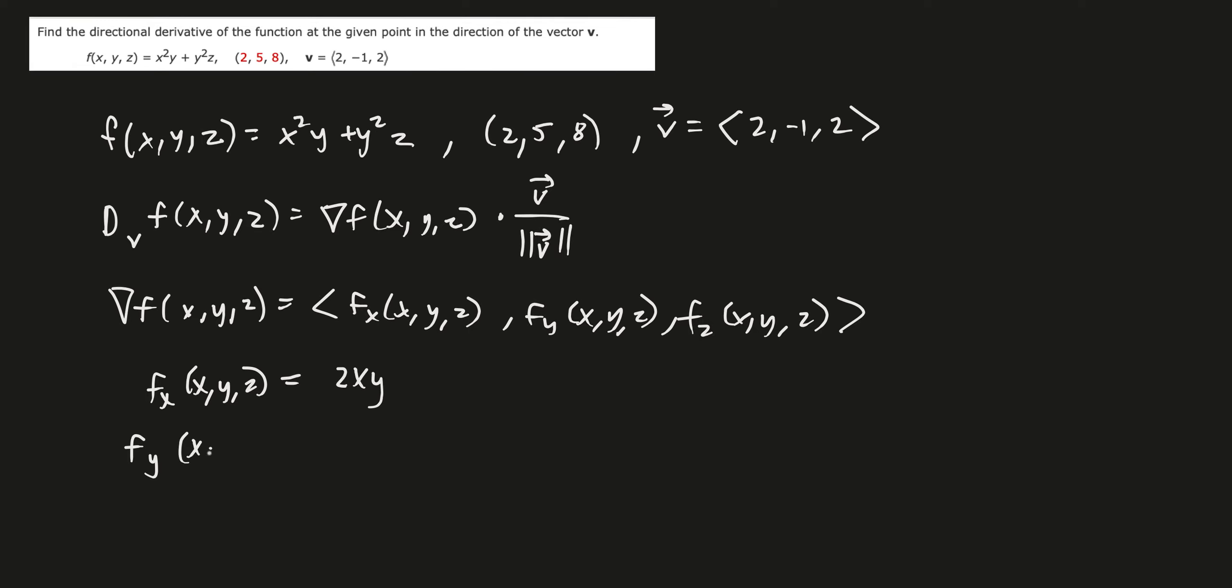Partial derivative with respect to y, treating x and z as a constant, we have x squared plus z times 2y, which is of course x squared plus 2y of z.